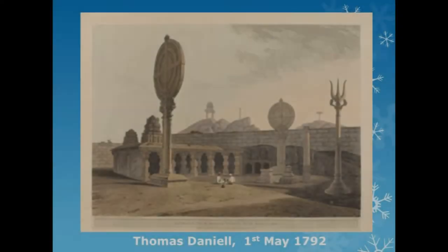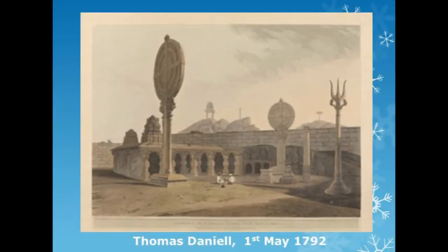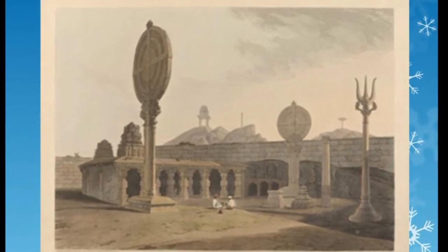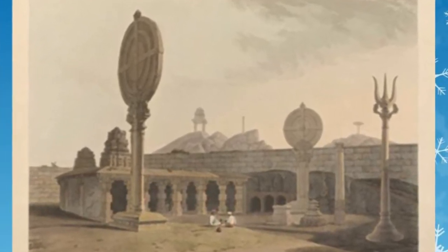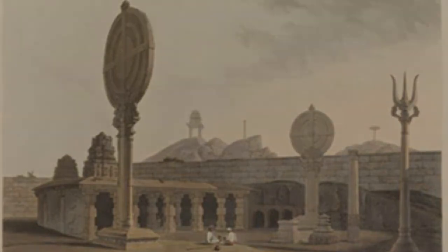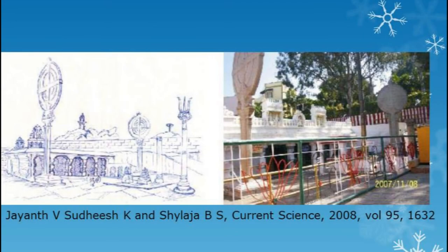Let us see some examples from our own country. This is a painting of the famous Gavi Gangadharishwara temple in Bengaluru by Thomas Daniel in 1792. The large stone discs in the front yard are used for marking summer and winter solstices. This painting shows that the window for the sun rays, which is a crowd-puller today, did not exist in 1792. The extensions and construction of a window were executed in the last 200 years, and the use of the two large discs as solstice markers is almost forgotten.